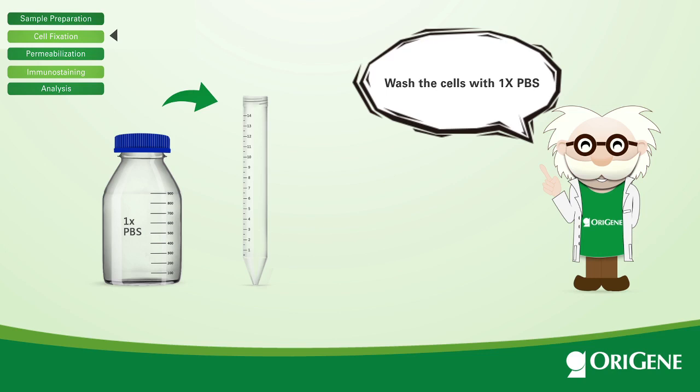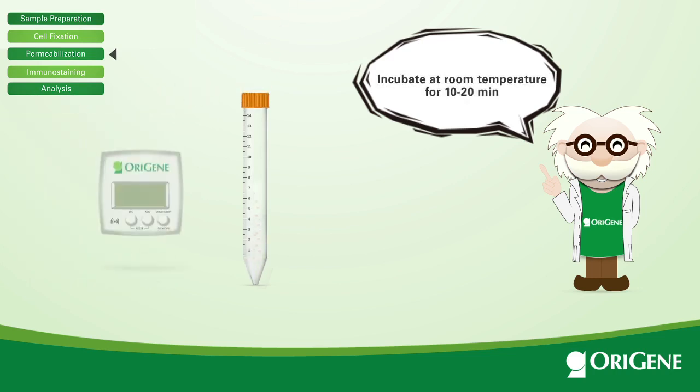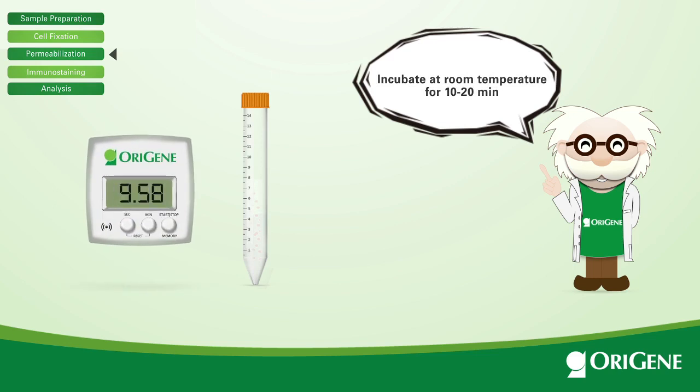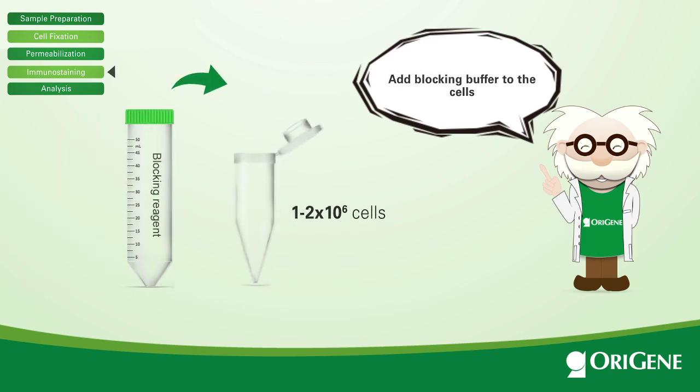Please skip the next step, permeabilization, if your protein of interest is extracellular. Resuspend the cells in the permeabilization buffer and incubate at room temperature for 10 to 20 minutes. After removing the supernatant, resuspend the cells in PBS and aliquot 1 to 2 million cells into each test tube containing the blocking buffer.